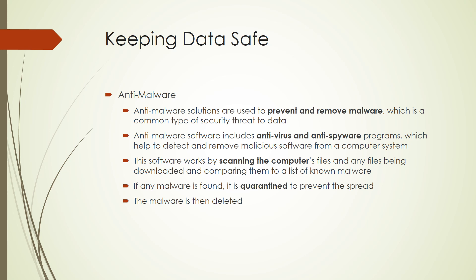Next is anti-malware. If you are using Windows 10 or 11, you don't need to install any antivirus — just update your system and make sure your system's privacy and firewall are active; there's no need to install new antiviruses. Otherwise, you need anti-malware solutions to prevent and remove malware. Anti-malware software includes antivirus and anti-spyware programs which detect and remove malicious software. It works by scanning files and comparing them to a list of known malware; if malware is found it is quarantined and then deleted.